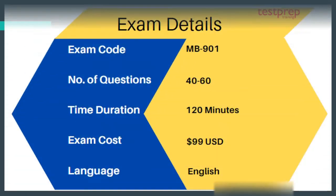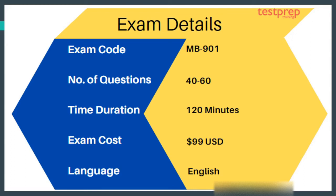Exam Details: 1. Exam Code is MB-901. 2. Number of Questions are 40 to 60. 3. Time Duration is 120 minutes. 4. Exam Cost is 99 US Dollars. 5. Language is English.